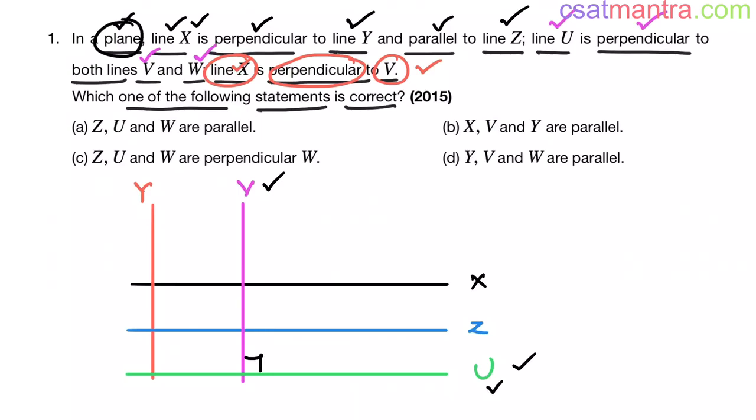Now u is also perpendicular to line w. Let us draw line w which is perpendicular to line u. This is line w. u and w are perpendicular to each other.